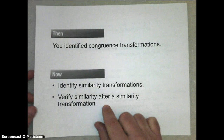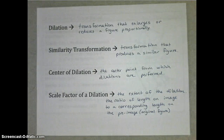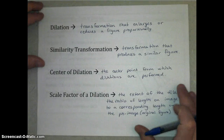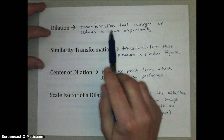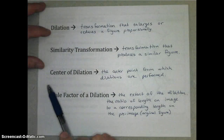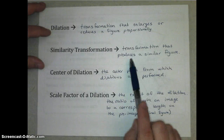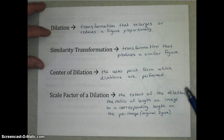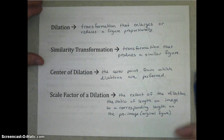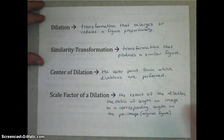We'll also verify similarity after a similarity transformation. The similarity transformation we're going to focus on is called a dilation — a transformation that either enlarges or reduces a figure proportionally. That's why it's a similarity transformation: it produces a similar figure. In a dilation, whether it's an enlargement or reduction, the resulting figures will be similar.